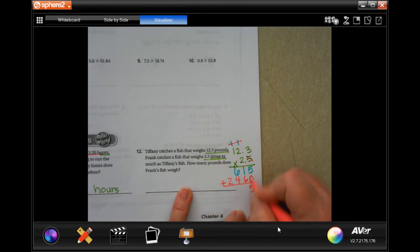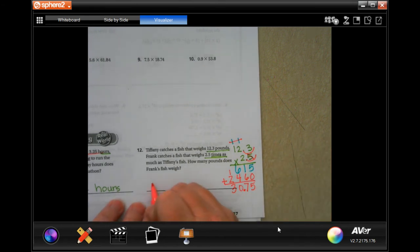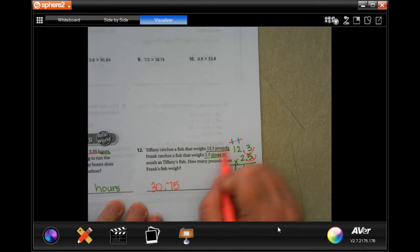Add those together: five plus zero is five, one plus six is seven, six plus four is ten, carry a one, and one plus two is three. This went in one, two places, one, two places, so 30.75 pounds.